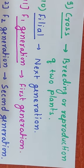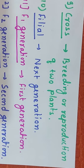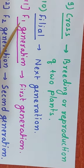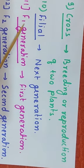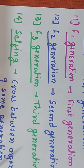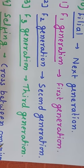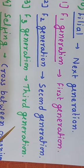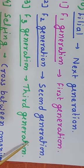Any next generation produced from a cross is called the filial generation. F1, F2, and F3 are filial generations — F stands for filial. The number indicates which generation we are talking about: F1 generation is the first generation of any cross, F2 is the second generation, and F3 is the third generation.